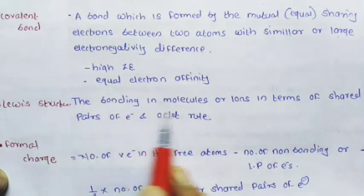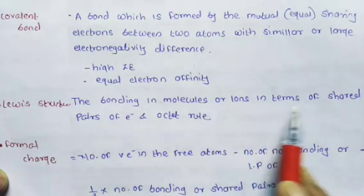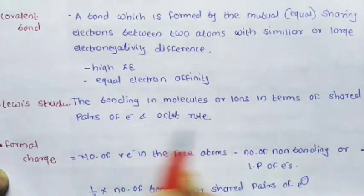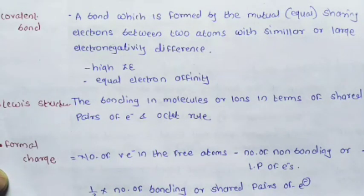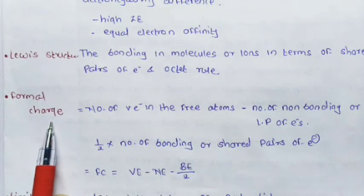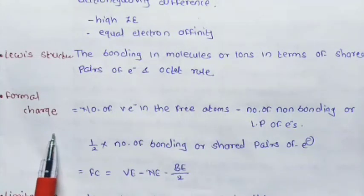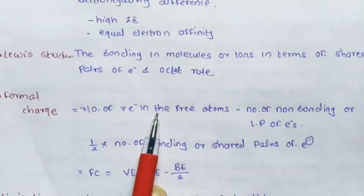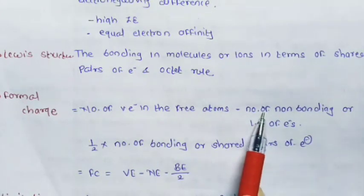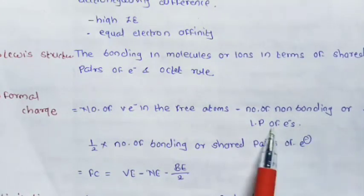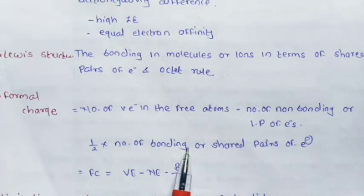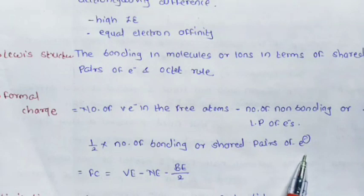The next point is Lewis structure. The bonding in molecules or ions in terms of shared electron pairs or the octet rule forms the Lewis structure. Another term is formal charge. The formal charge of a molecule is calculated by: number of valence electrons in the free atom minus number of non-bonding electrons (lone pair) minus one-half times the number of bonding or shared pair of electrons.